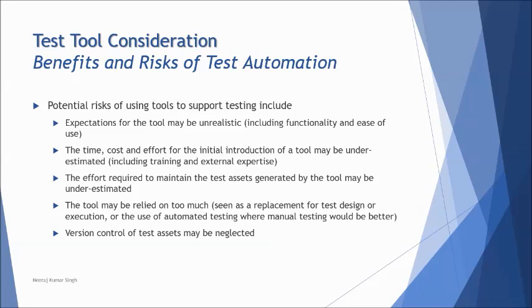Version control of test assets may be neglected. Every time you run a test, a new test asset is created, and if you repeat a test for several iterations, multiple assets are generated. If version control is ignored, traceability between them becomes difficult. For example, if you run a test with three iterations and two pass and one fails, mapping the assets makes it easier to find the issue rather than reviewing the entire code.